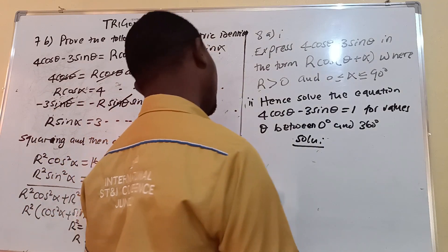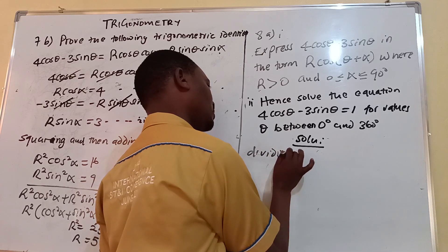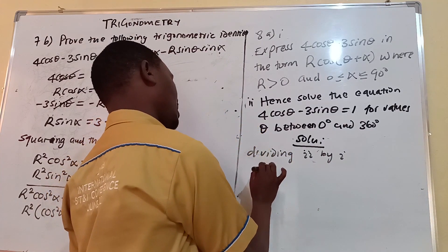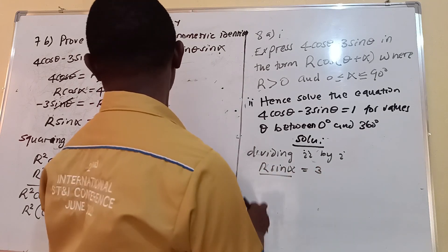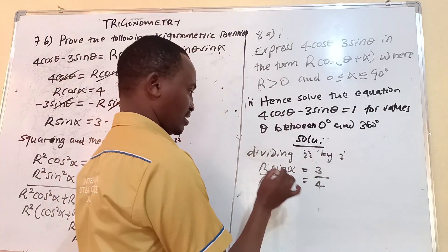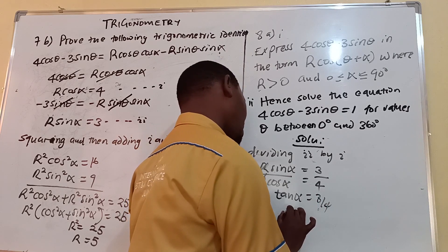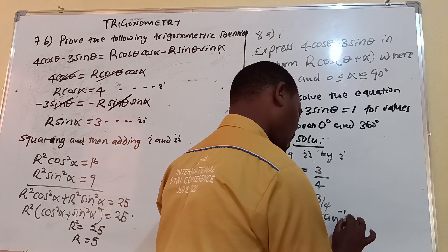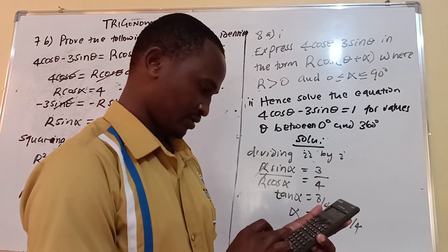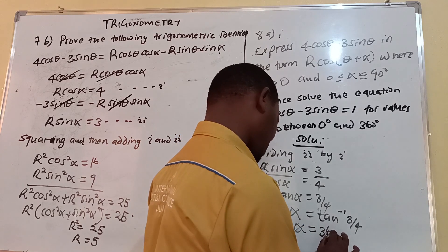Now dividing equation 2 by equation 1: R sin alpha over R cos alpha gives tan alpha equals 3 over 4. So alpha equals tan inverse of 3 over 4. Working that out: tan inverse of 0.75 is approximately 36.86 degrees.